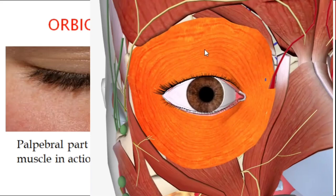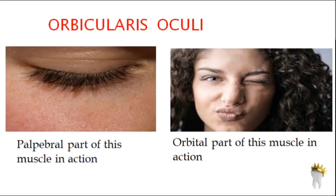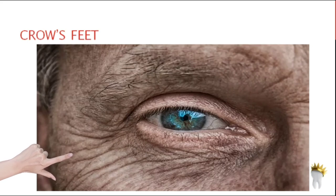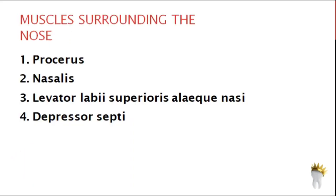Orbicularis oculi is a broad flat muscle surrounding the orbit with three main parts: the orbital portion, palpebral portion, and lacrimal portion. The palpebral part closes the eyes lightly when you blink, while the orbital part closes the eyes tightly when something pokes your eye. Tight closure produces lateral canthal lines, also called crow's feet.